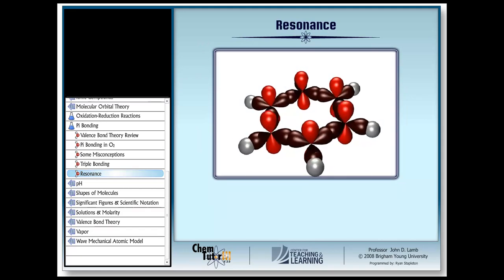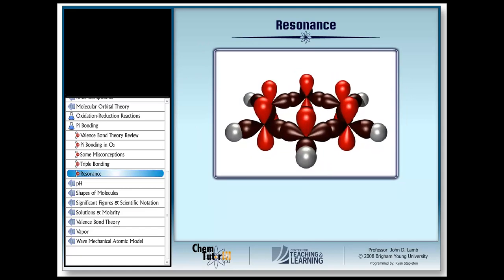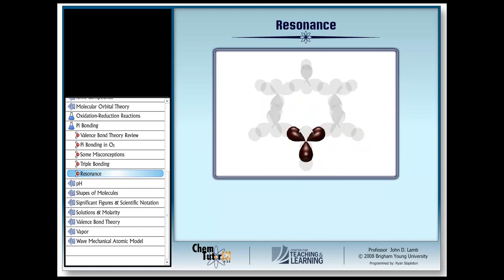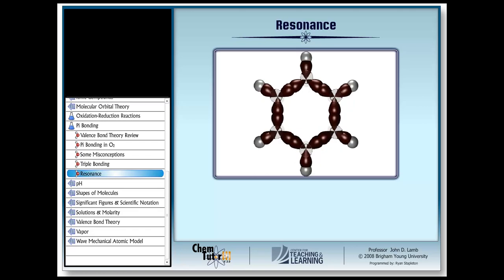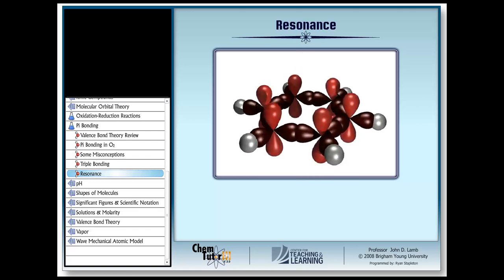Notice that because of the geometry of the sp2 orbitals, trigonal planar, all the sigma bonds lie in a plane, making the whole molecule flat like a ring. But the leftover p orbitals on the carbon atoms stick out above and below the plane of the ring.